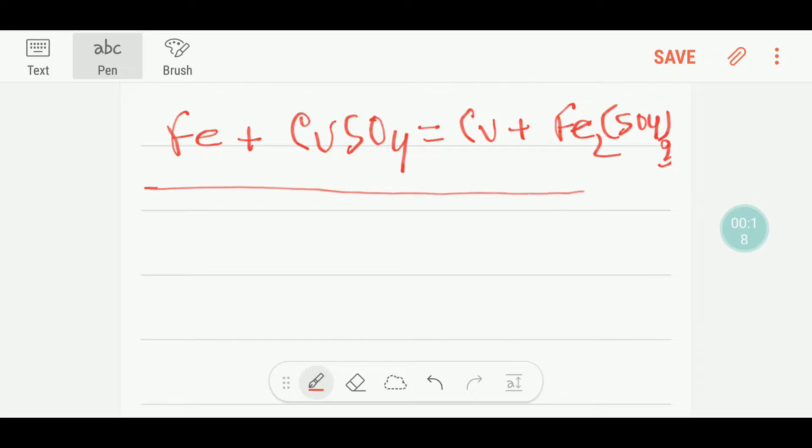To balance this equation I can draw a table like this. On the left hand side we have just one iron, one copper, and one sulfate. This is a unique total unit.